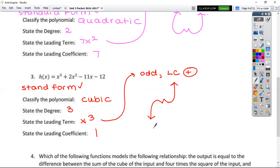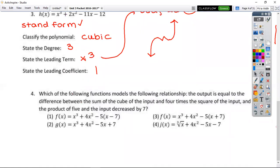Questions? Perfect. Here's your last one. So you just have to read. It says, which of the following functions models the following relationship. The output is equal to the difference between the sum of the cube of the input and four times the square of the input. I'm going to stop right there for a second. I see that we're doing a cube and a square. I see no mention of the cube root. That's out. And the power of five increased by seven. So that phrase right there is going to indicate my need for parentheses around that. So just choice one.